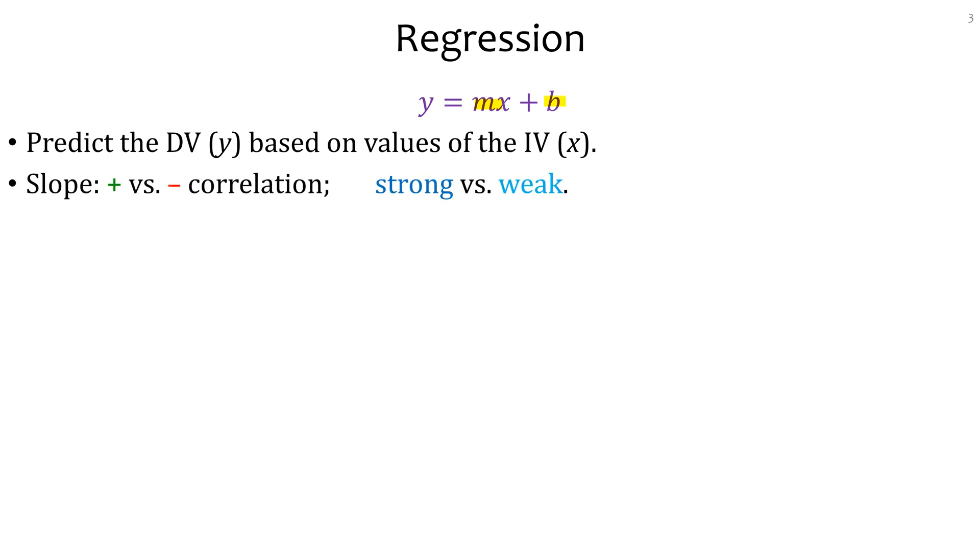When you have a regression line, the main format of that line is y equals mx plus b. Where y is your dependent variable and x is your independent variable. You're trying to predict the value of y based on the values of x. The m would be your slope term and the b would be your intercept. So the slope could be positive or negative, and that's how you can tell whether it's positive correlation or negative correlation. It can be strong or weak correlation, or it could be no relationship at all. The data that you see in some of your articles talk about whether there is any relationship or not.